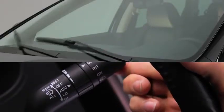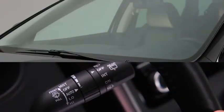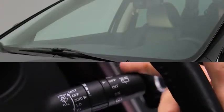For a single wipe, push the lever up to mist. For full-time low or high-speed wiping, pull the lever down to the low or high position.